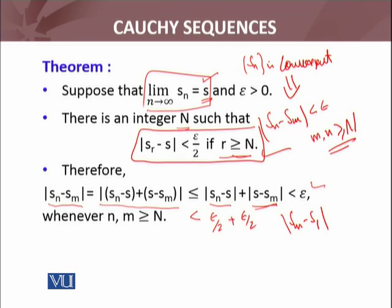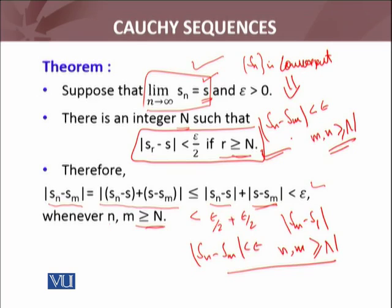So both of these could be less than epsilon by 2 plus epsilon by 2 by using the convergence of the sequence, which is this definition. Which sums up to epsilon. So, this is true whenever N and M are greater than or equal to N, because I have applied this for N and M. So I have started with the convergent sequence and by using some mathematical trick, I end up with this inequality, which is Sn minus Sm less than epsilon whenever N and M are greater than or equal to N, which is exactly the same where I have to reach. It means I have shown that the convergent sequence is Cauchy sequence.